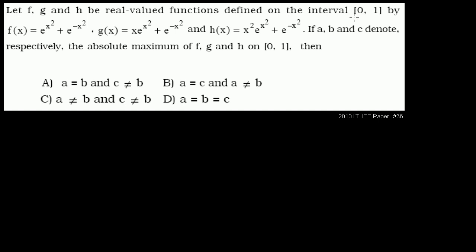Let f, g, and h be real-valued functions defined on the interval [0, 1] — the brackets tell us the boundaries 0 and 1 are included, unlike parentheses. They define f(x) = e^(x²) + e^(-x²), g(x) looks very similar to f(x) except there's an x in front of the first term, and h(x) looks similar to g(x) except it has an x² term there.